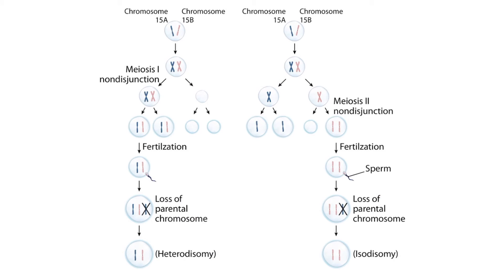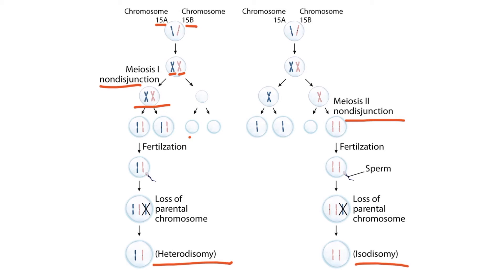This is a figure of uniparental disomy which can be found in section 2 of genetics. Notice from the image that the left side illustrates non-disjunction during meiosis 1, resulting in heterodisomy, and the right side illustrates non-disjunction during meiosis 2, resulting in isodisomy. The oogonium initially has two copies of chromosome 15, labeled A and B. During meiosis 1, these replicate their genetic information, resulting in sister chromatids. Normally the cell should divide and the chromosomes should separate equally, but in non-disjunction during meiosis 1, the chromosomes fail to separate, resulting in one cell with twice as much genetic information. Ultimately, two daughter cells lack genetic information and the other two daughter cells contain twice as much information.